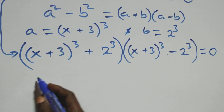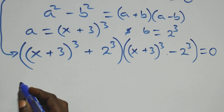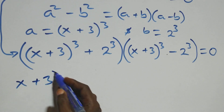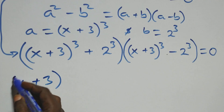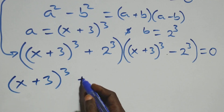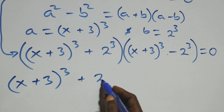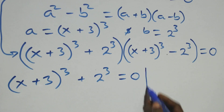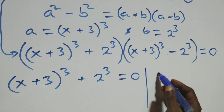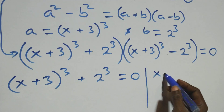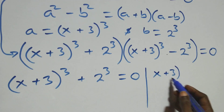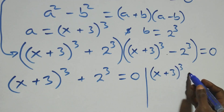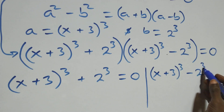Then here we have 2 possible cases. The first one: x plus 3, all raised to the power 3, plus 2 raised to the power 3, equals to 0.